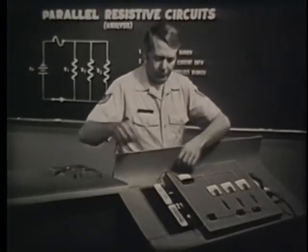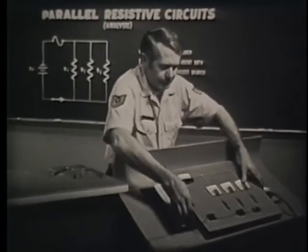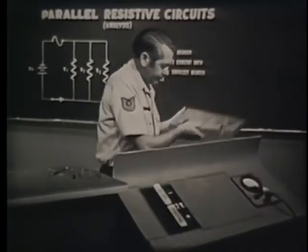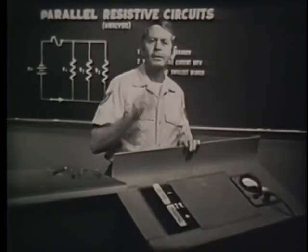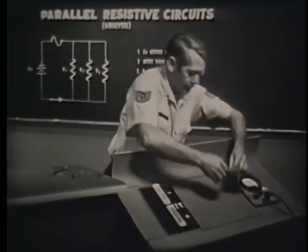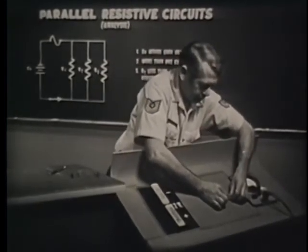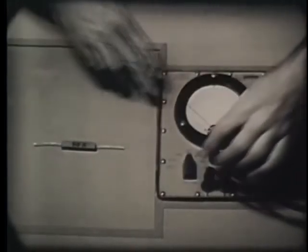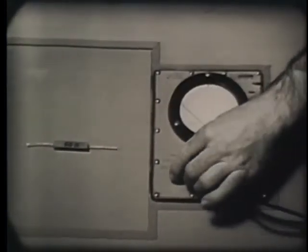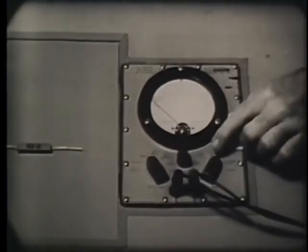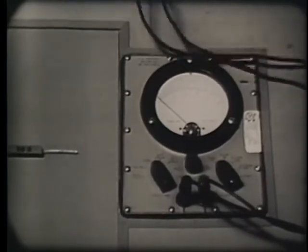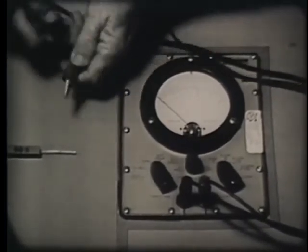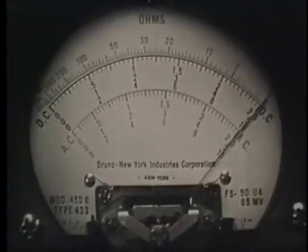Let's use the ohmmeter to prove this. I'll measure some resistors with identical values to those in our trainer. We must set the meter up to measure resistance: function switch to ohms, range times 10. As always, you must zero the meter before using it. Checking the zero — the meter is zeroed.